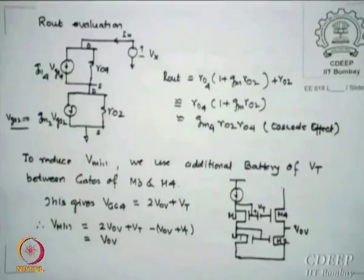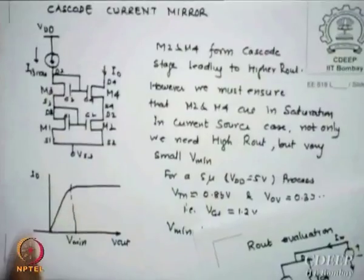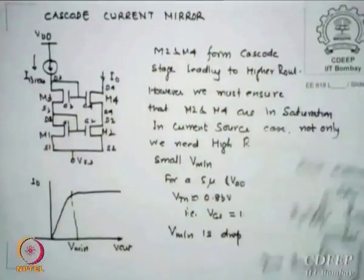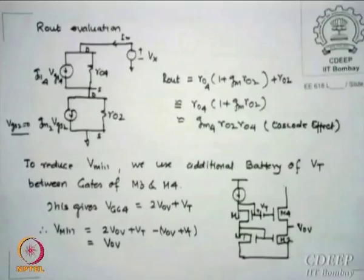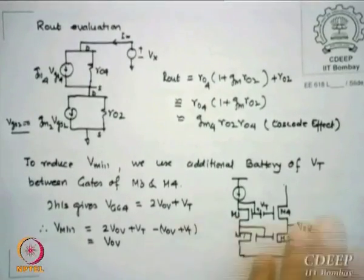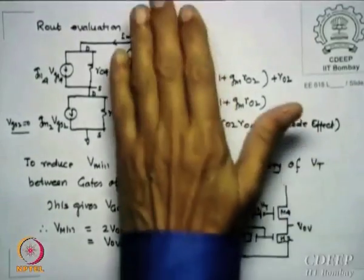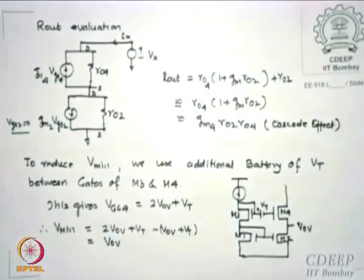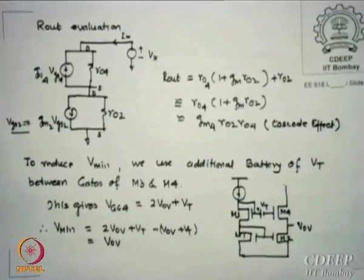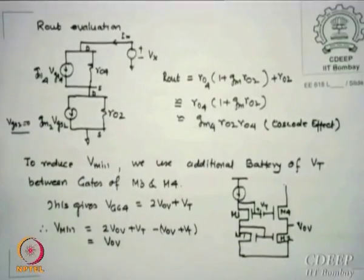I have improved Rout but also increased Vmin. My first characteristic for a good current source is that Vmin should be close to zero. So I want to keep Rout high but now reduce Vmin. The approach: first use a simple mirror, then cascode to get higher Rout, now reduce Vmin while keeping Rout the same. If possible I may want to increase Rout further, but reducing Vmin is the next priority.